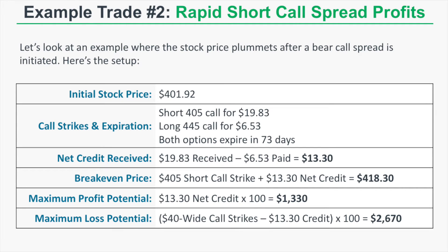Example number two: a bear call spread where the stock price plummets. The initial stock price is $401.92. We sell the 405 call for $19.83 and buy the 445 call for $6.53. Both options expire in 73 days. Our net credit is $13.30, bringing our break-even price to the short call strike of 405 plus $13.30, which equals $418.30. Maximum profit potential is $1,330 and maximum loss potential is $2,670.